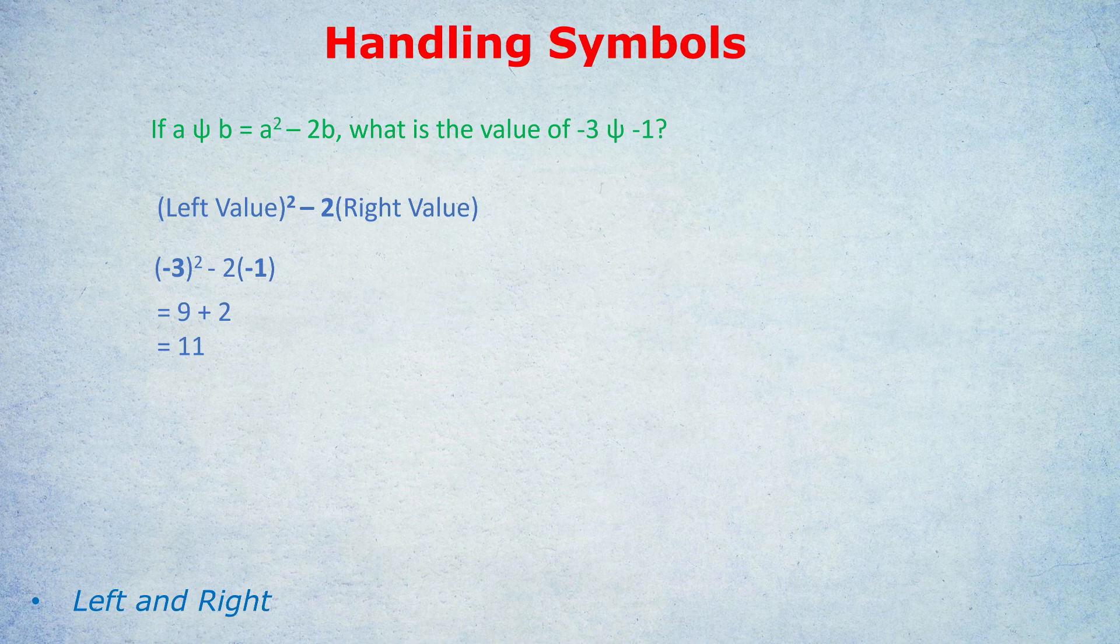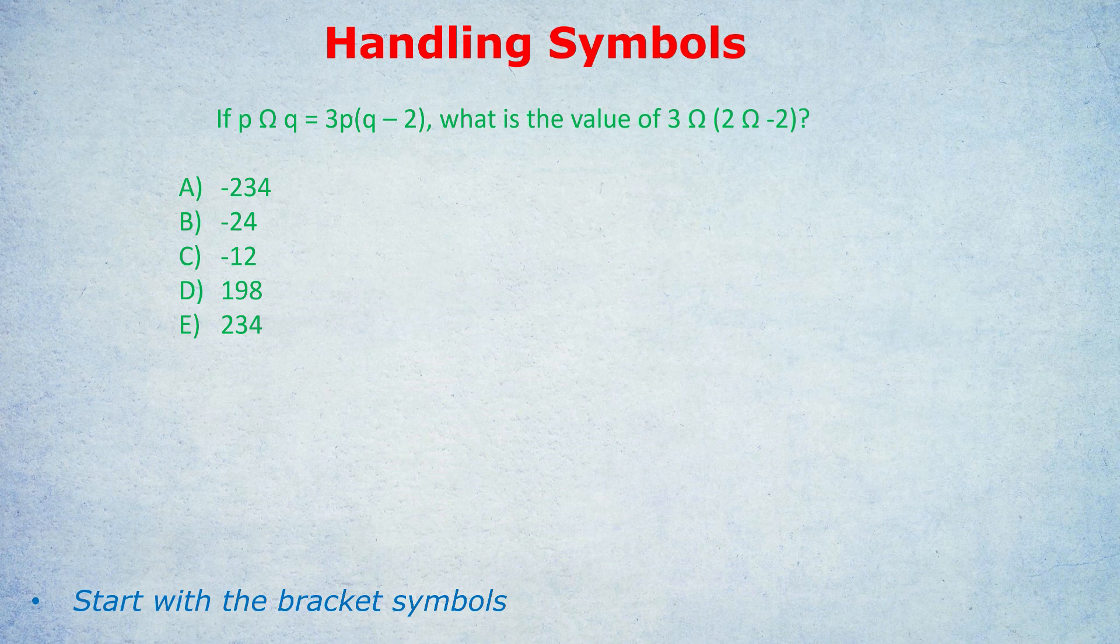Many of you are starting to get it now. Let's end with one final hurrah with a new symbol. If p symbol q equals 3p(q - 2), what is the value of 3 symbol (2 symbol (-2))? This time we have answer choices. I encourage you—pause, try your best, take your time. These are 165 to 170 level questions for the GRE, the hardest questions for the GMAT. We need to start with the bracket symbols.